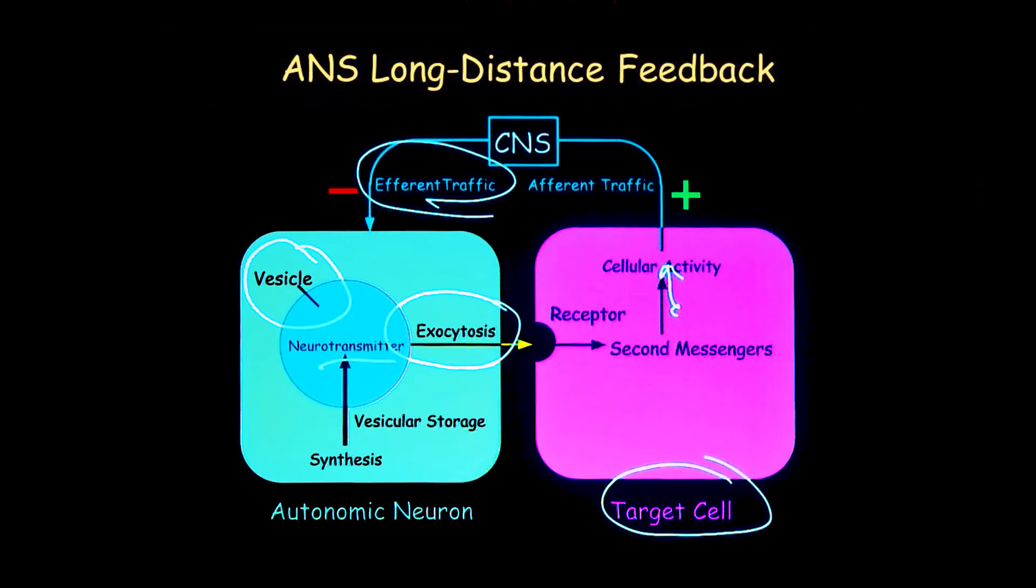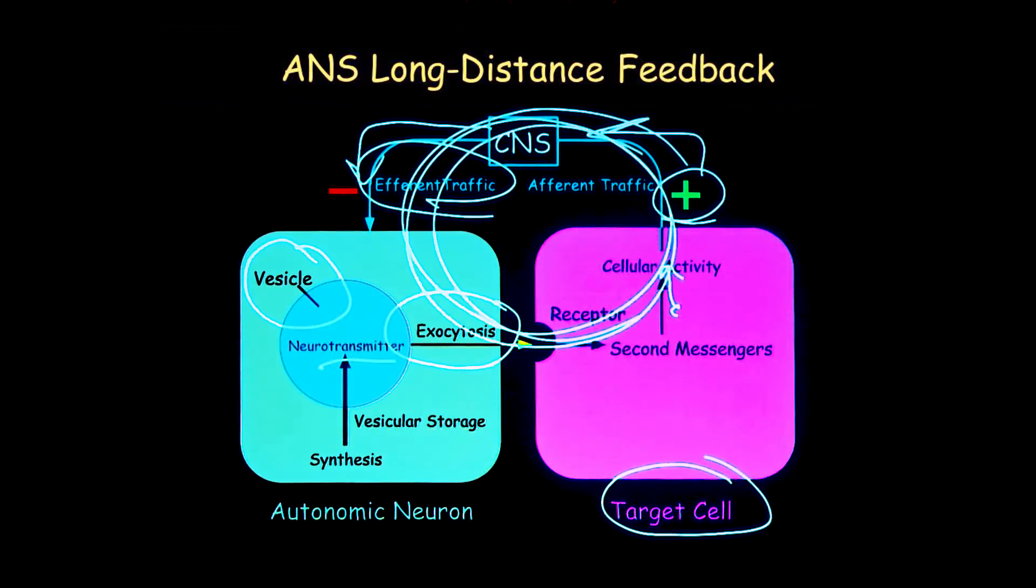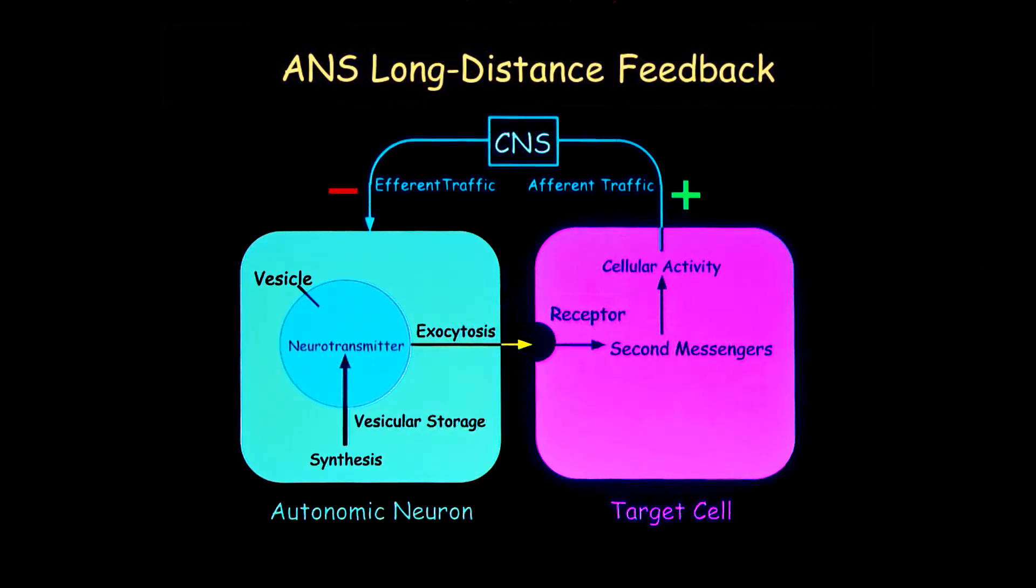Let's just say in blood pressure and so forth, there's afferent traffic to the brain which affects the efferent traffic. You have this cycle and it's a negative feedback loop.